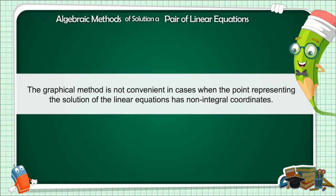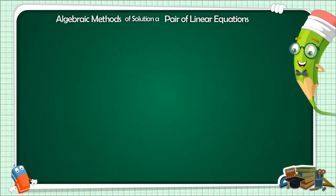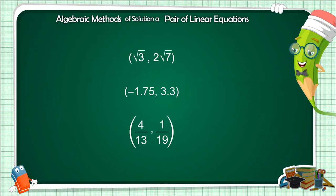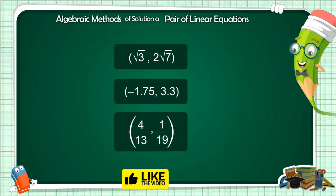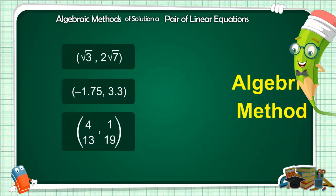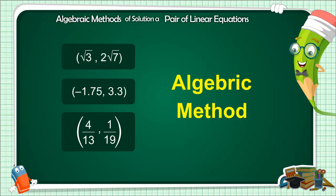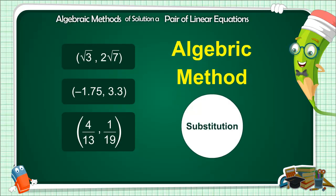When the solutions of linear equations are in the form of non-integer, graphical methods are not convenient. Some examples of non-integer coordinates are: root 3, 2 root 7, minus 1.75, 3.3, 4 by 13, 1 by 19. Most of the mistakes can be made in reading these coordinates graphically. We can solve this problem with the algebraic method. In this video, we will try to understand one of those methods — the substitution method.